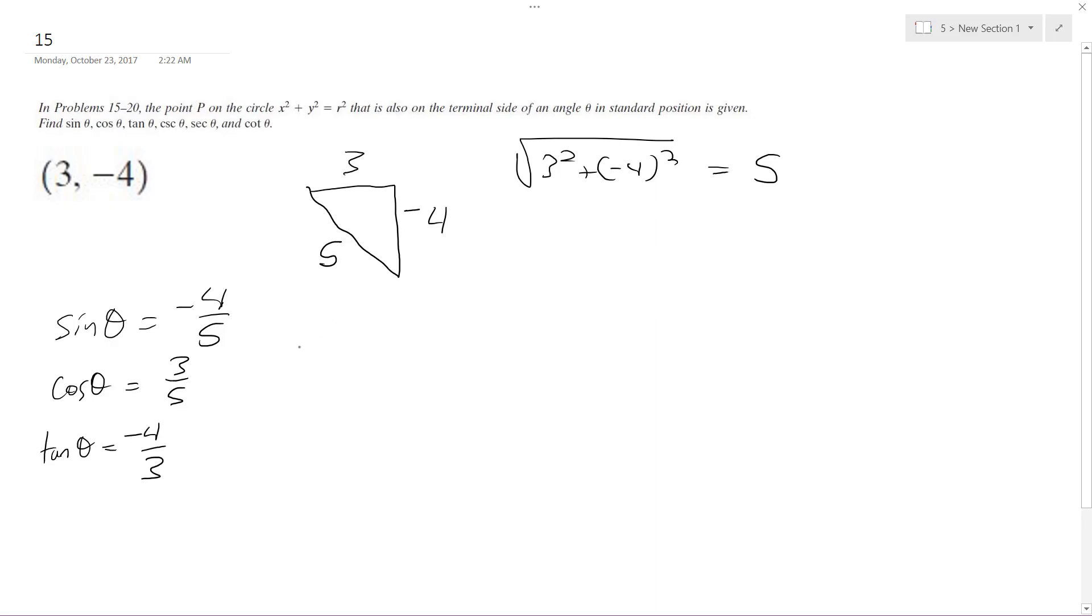So then next up, cosecant of theta is going to be equal to the inverse of the sine, which is 5 over 4. Secant of theta, 5 over 3, and then cotangent of theta is going to be equal to negative 3 over 4.